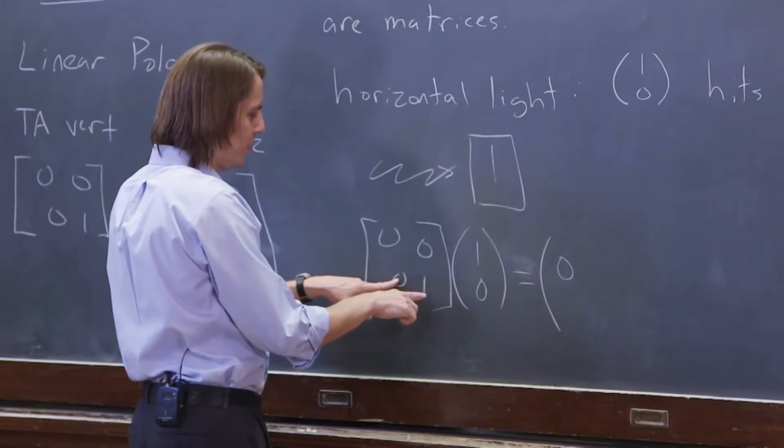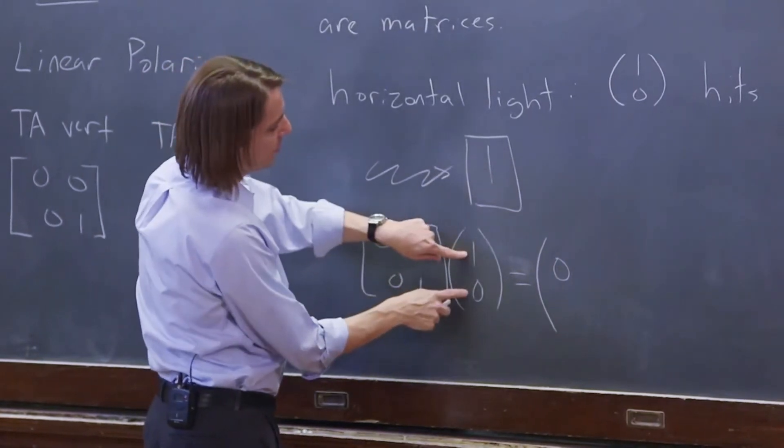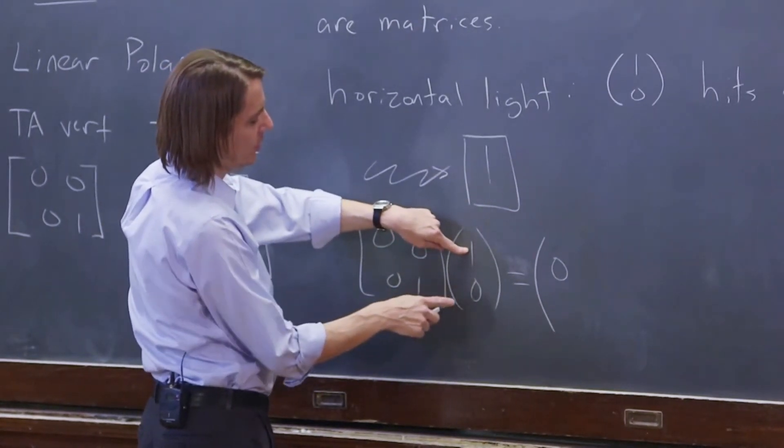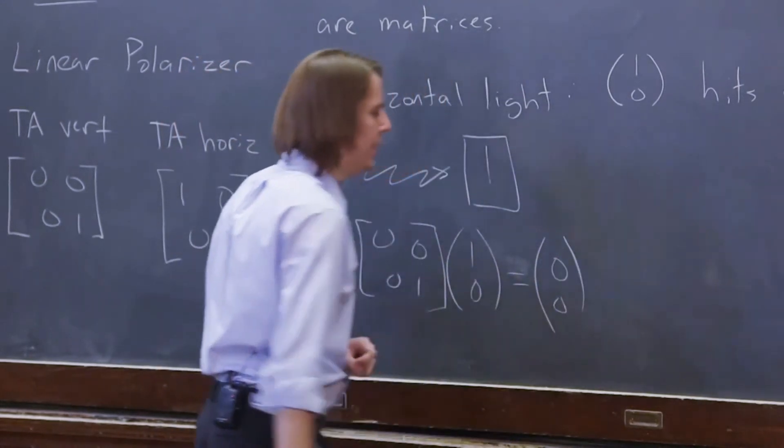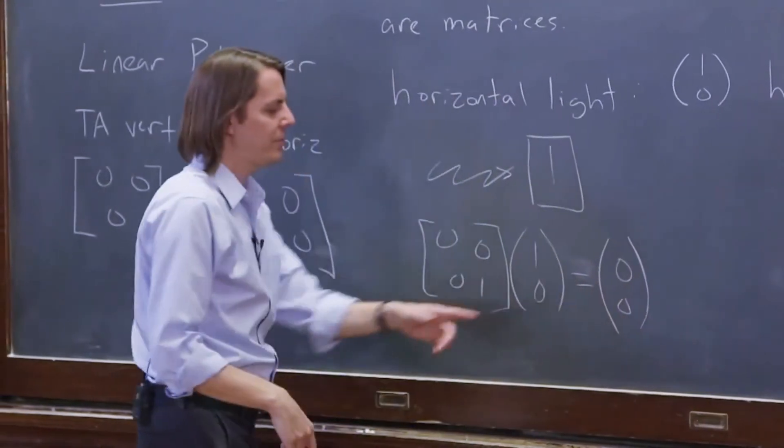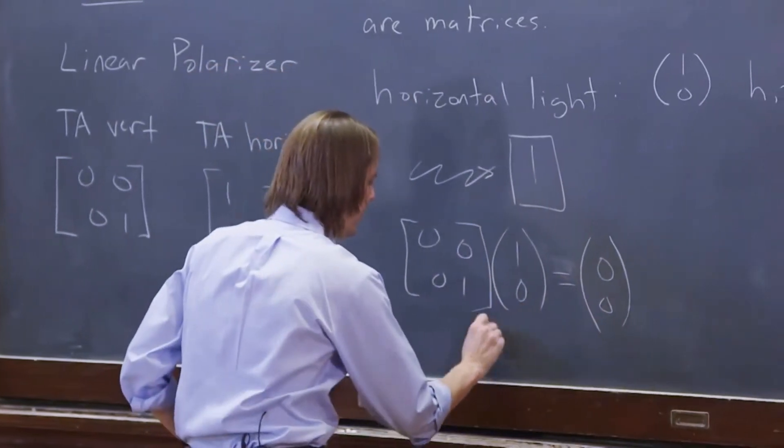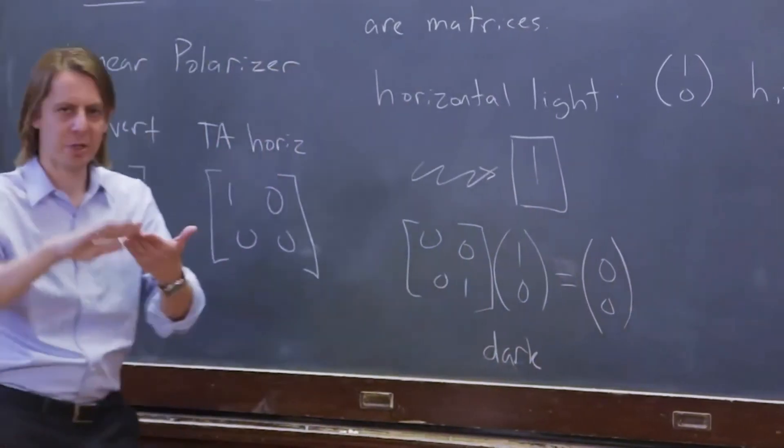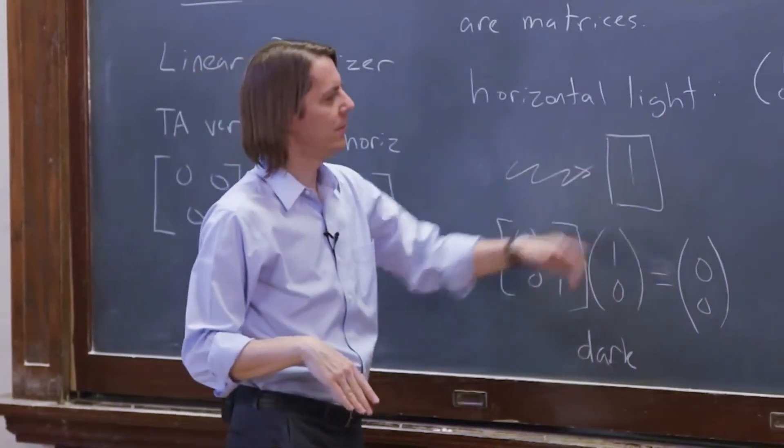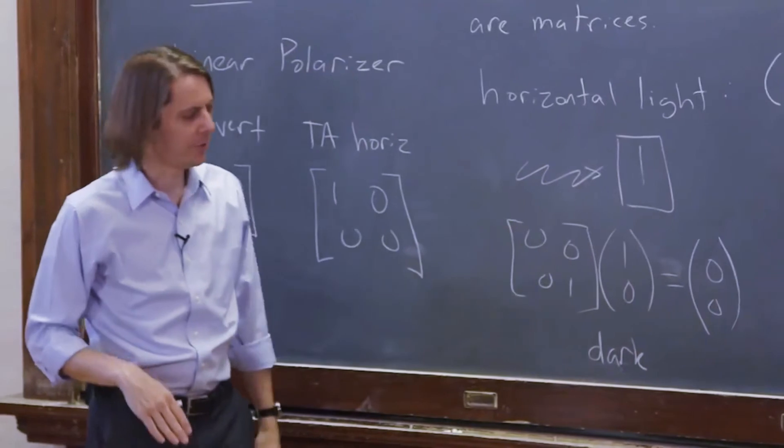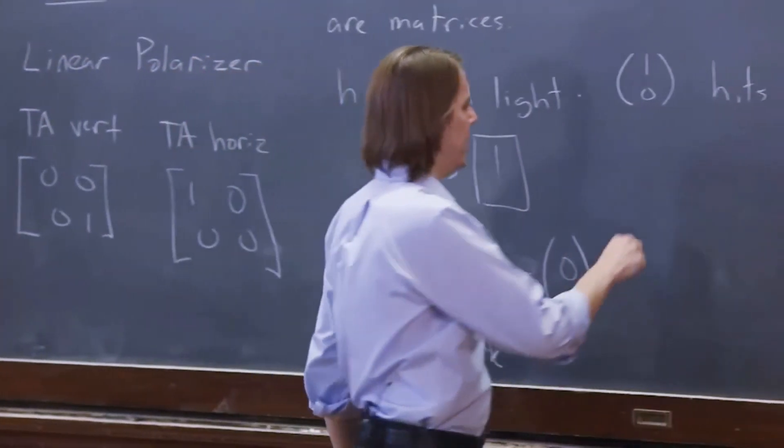For the bottom element, you take the 0 and the 1, turn it sideways and multiply. 0 times 1 is 0, 1 times 0 is 0, 0 plus 0 is 0. These matrices say nothing gets out. It's dark. When we have the cross between horizontal light and the vertical polarizer, nothing comes out.